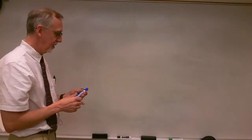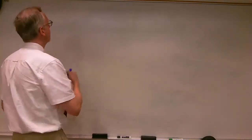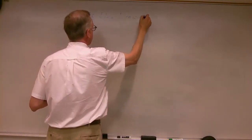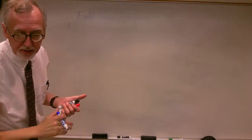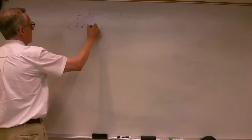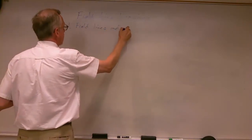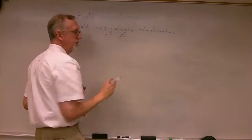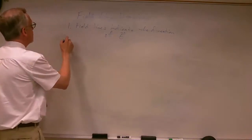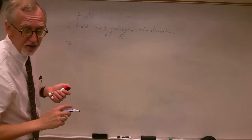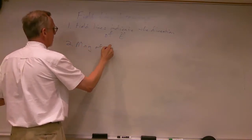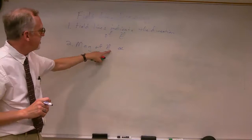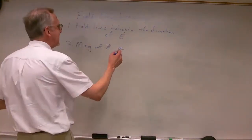Now there are three points to keep in mind when making a field line drawing. The first point to keep in mind is that the field lines indicate the direction of the electric field.